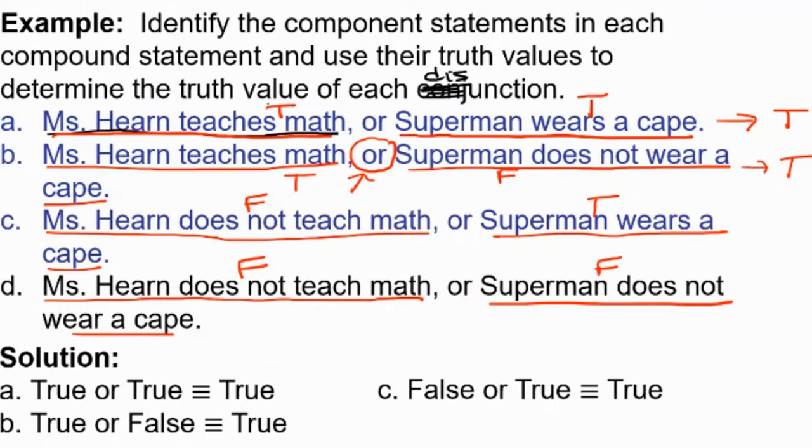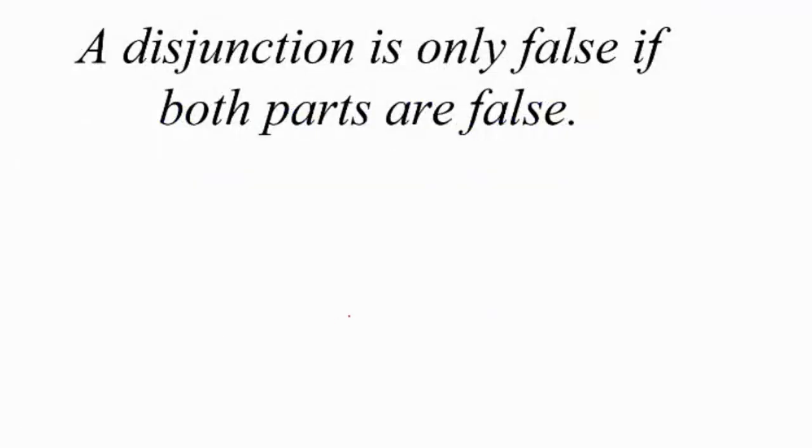So false or false is false. In a disjunction, remember, or is called a disjunction. In a disjunction, what is the only case where we got false? Two falses, that's right. So this is the second extremely important rule that you need to make a note of. A disjunction is only false if both parts, technically those parts are called components. But a disjunction is only false if both parts are false.